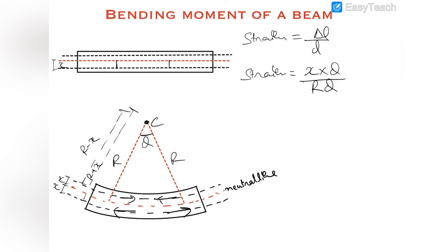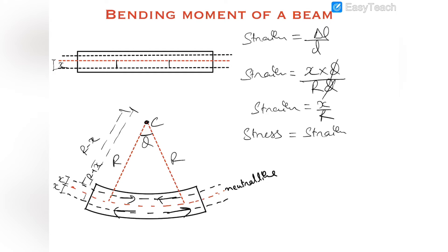This is not an assumption but a fact: the neutral line of a beam with uniform mass distribution has no extension or compression. Therefore theta cancels out and the strain produced is equal to x divided by r. The stress produced is then strain times gamma (Young's modulus), giving stress equal to x times gamma divided by r.